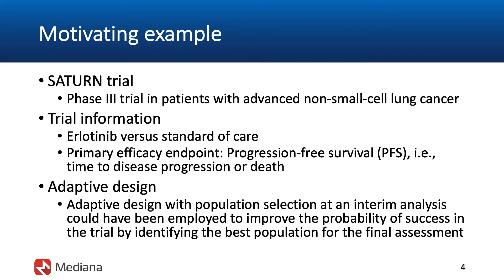These Herceptin trials selected patients who were HER2 receptor positive — HER2 being a certain type of growth factor receptor. A very important feature of those trials was that patients who were not HER2 receptor positive, that is, patients in the complementary subset, simply were not enrolled at all. The clinical trial revealed that Herceptin was a very effective treatment for breast cancer within this focused subset of the overall population. Those trials helped realize the promise of tailored therapeutics.